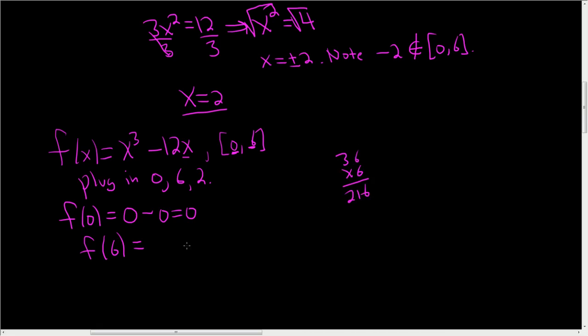So 216 minus 12 times 6. So that's 216 minus 72, so that's 144. So f of 6 is 144.